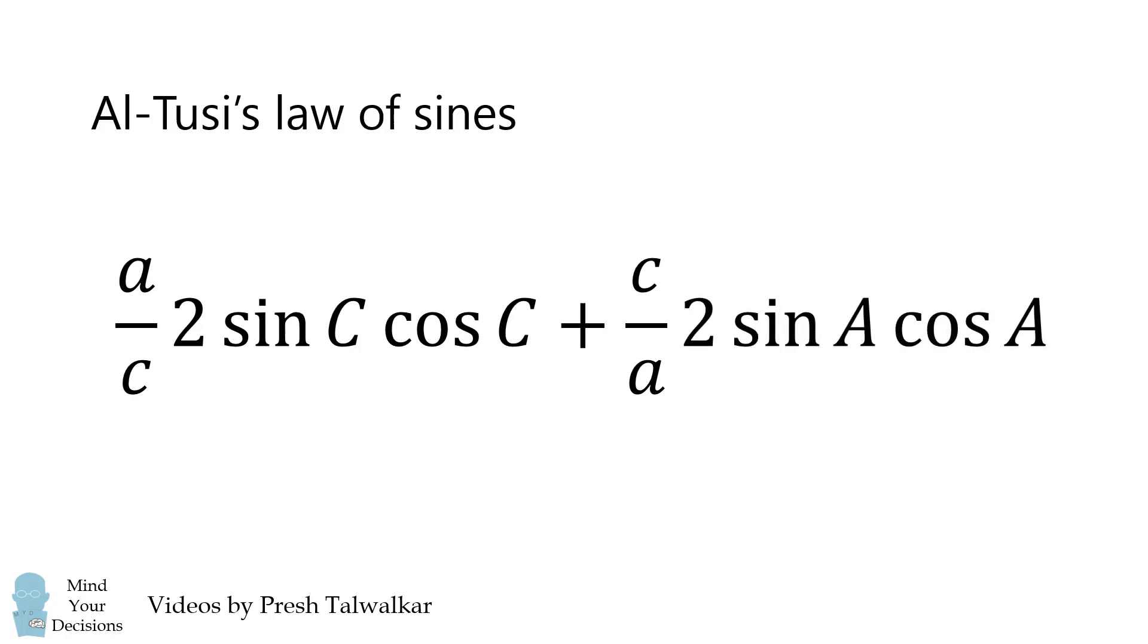Next, we'll use Al-Tusi's Law of Sines. This states that sine of the angle A over the side a is equal to sine of the angle B over side b, which is equal to the sine of the angle C over side c. We're only going to need the sine A over a and sine C over c formulas.